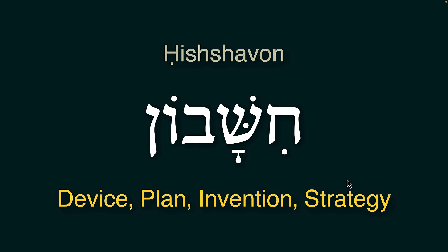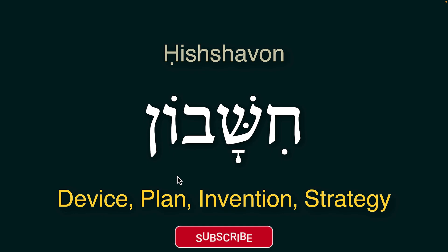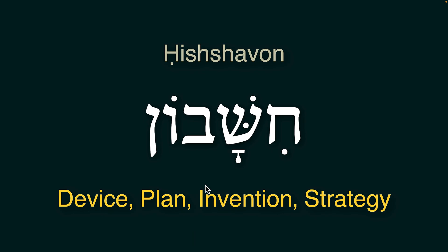Hishavonoth is a plural and the singular would be Hishavon — meaning a device. It could be a physical device with many working parts, like a contraption, or it could be a plan, an invention, or a strategy. All of these are Hishavon or Hishavonoth.